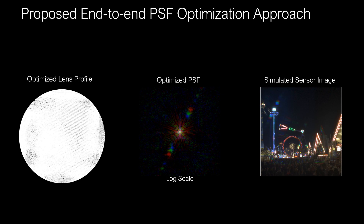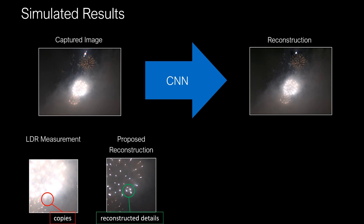The optimized optical filter resembles a grating, which creates a PSF with several peaks. Such a PSF creates multiple differently scaled copies overlaid in the same sensor image. A simulated captured low-dynamic range measurement looks like this, with a close-up of the brightest region shown in the bottom left. Note the copies of the fireworks. The network takes this low-dynamic range image with copies and uses them to fill in the details of the saturated region.